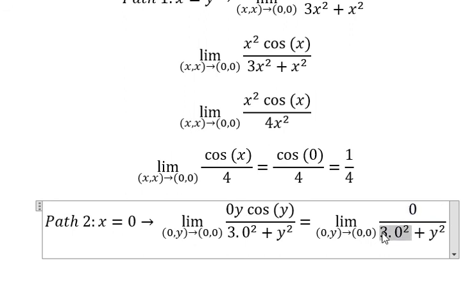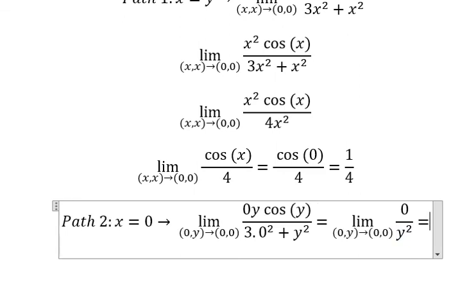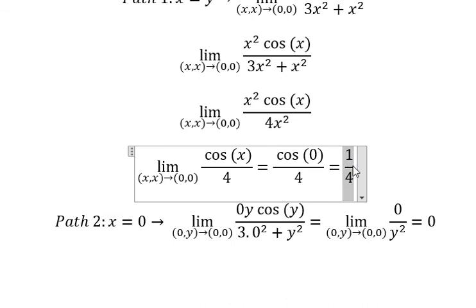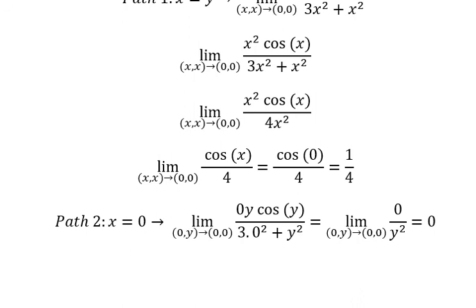That means we get 0 times y times cos(y) over 3 times 0 squared plus y squared. This equals 0 over y squared, which equals 0. So the limit is 0.